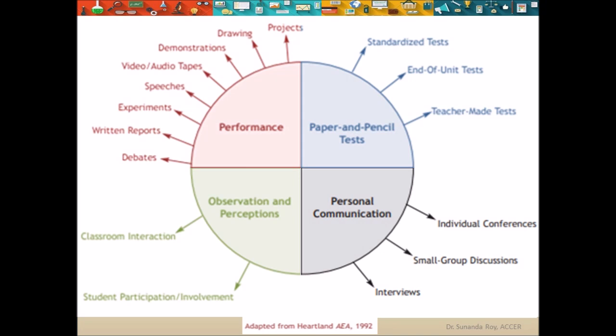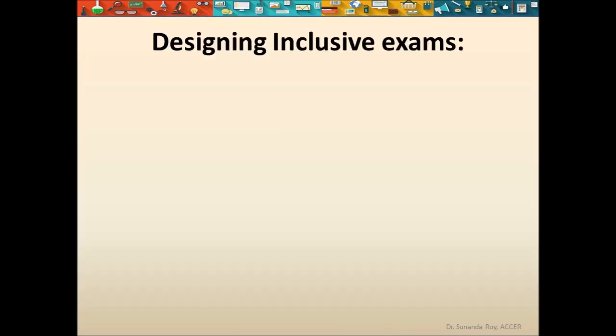The last two types — that is, classroom interaction and communication — are very important for both students with disabilities and typically developing students. These assessments give the real picture of how successful the teacher is in implementing inclusion in the classroom. These social skills are vital for all students because they determine whether students with and without disabilities will adjust well and mingle in society as adults, to become contributing members of society. Keeping in mind the principle that assessment should not segregate students with disabilities or the differently abled, teachers can design inclusive assessments.